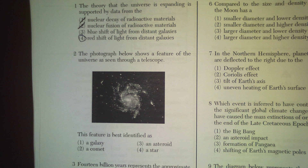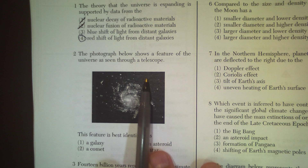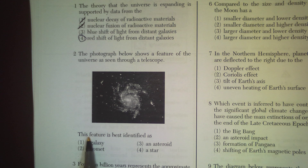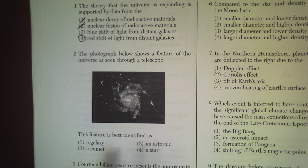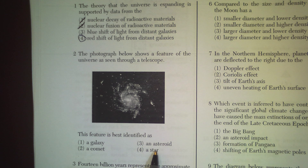Question two reads: the photograph below shows a feature of the universe as seen through a telescope. This feature is best described as what? A galaxy, a comet, an asteroid, or a star.